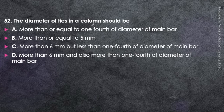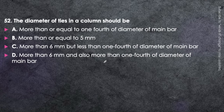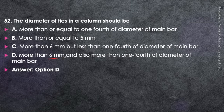Next question: The diameter of ties in a column should be more than 6 mm and also more than one-fourth of the diameter of the main bar — option D. From IS-456, the minimum diameter for ties is 6 mm. The ties diameter must satisfy both conditions: ≥ 6 mm and ≥ d_main/4. Memorize this.